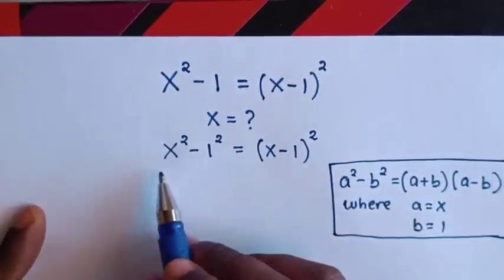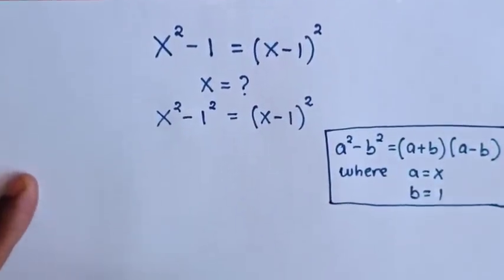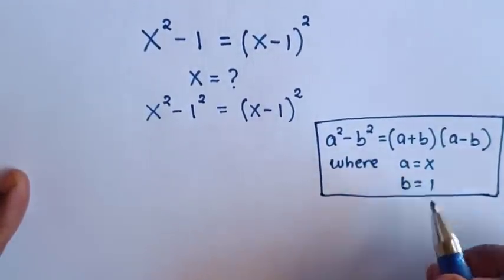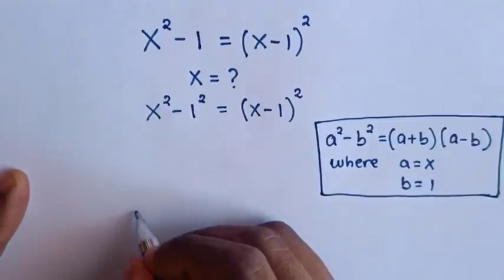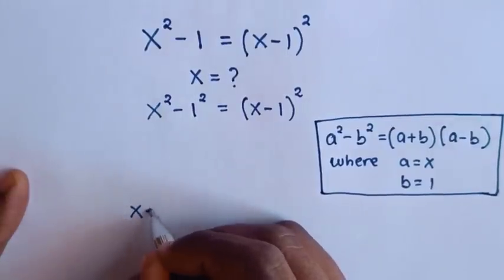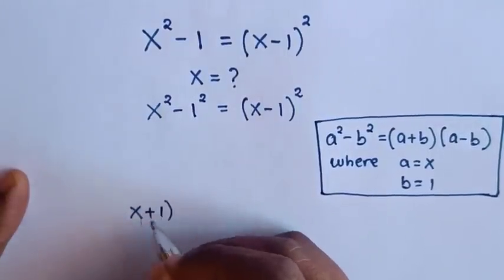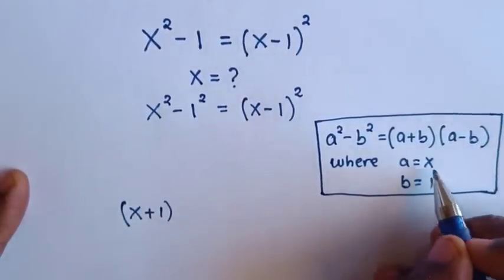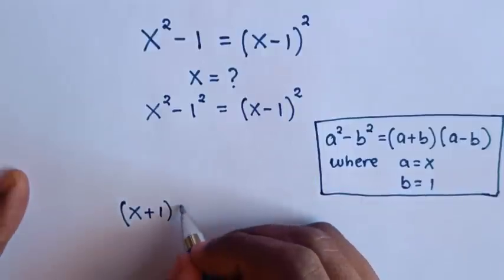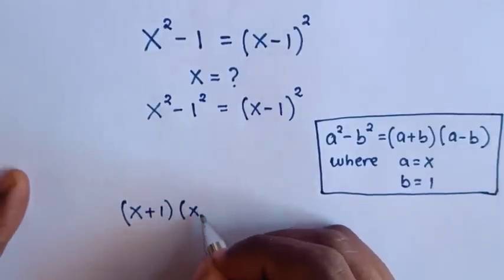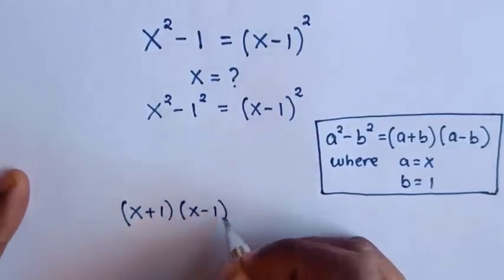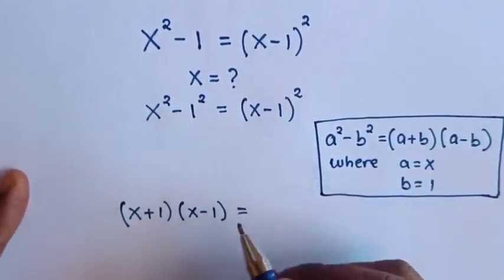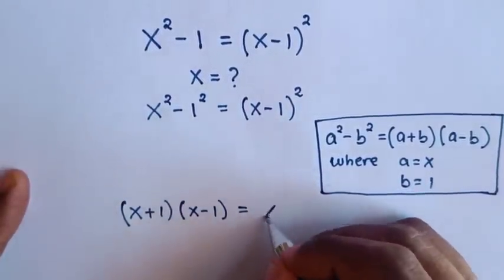So in this part of our equation, in expanded form, it will be (a plus b) which is (x plus 1) times (a minus b) which is (x minus 1), is equal to (x minus 1) squared.